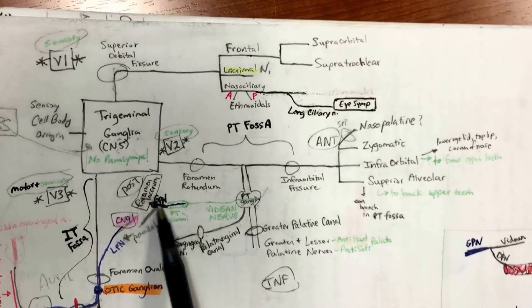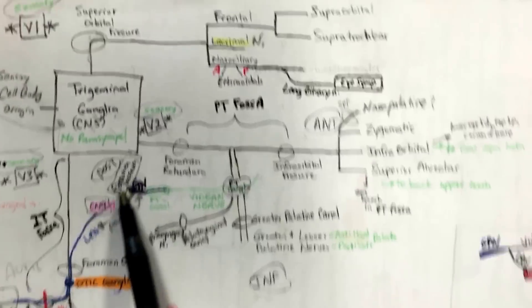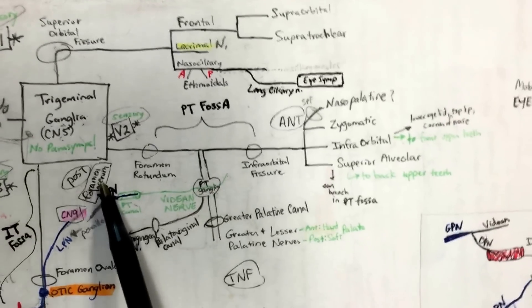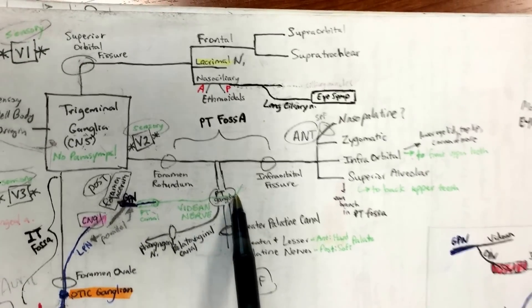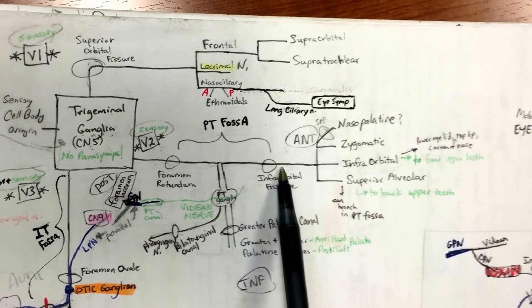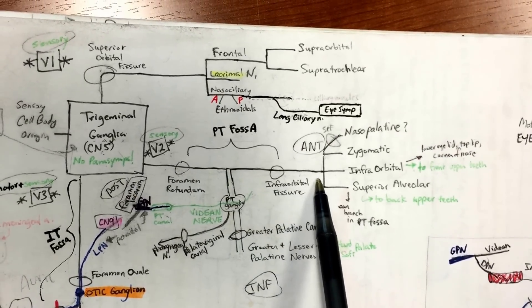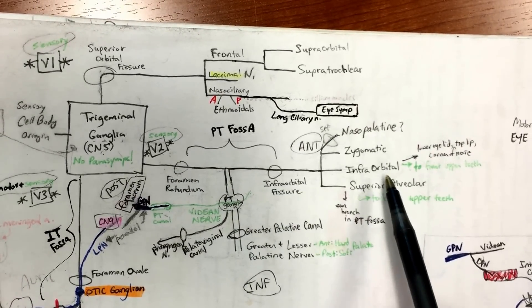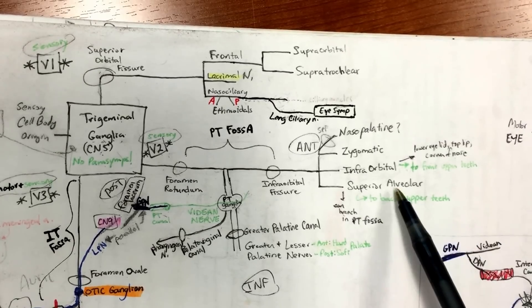Back to V2, so we're here. Also, another thing: greater petrosal nerve is gonna come through foramen lacerum, apparently I learned that and added in later. After you come out of the infraorbital fissure, the main things to remember are the zygomatic nerve and the infraorbital nerve and superior alveolar.